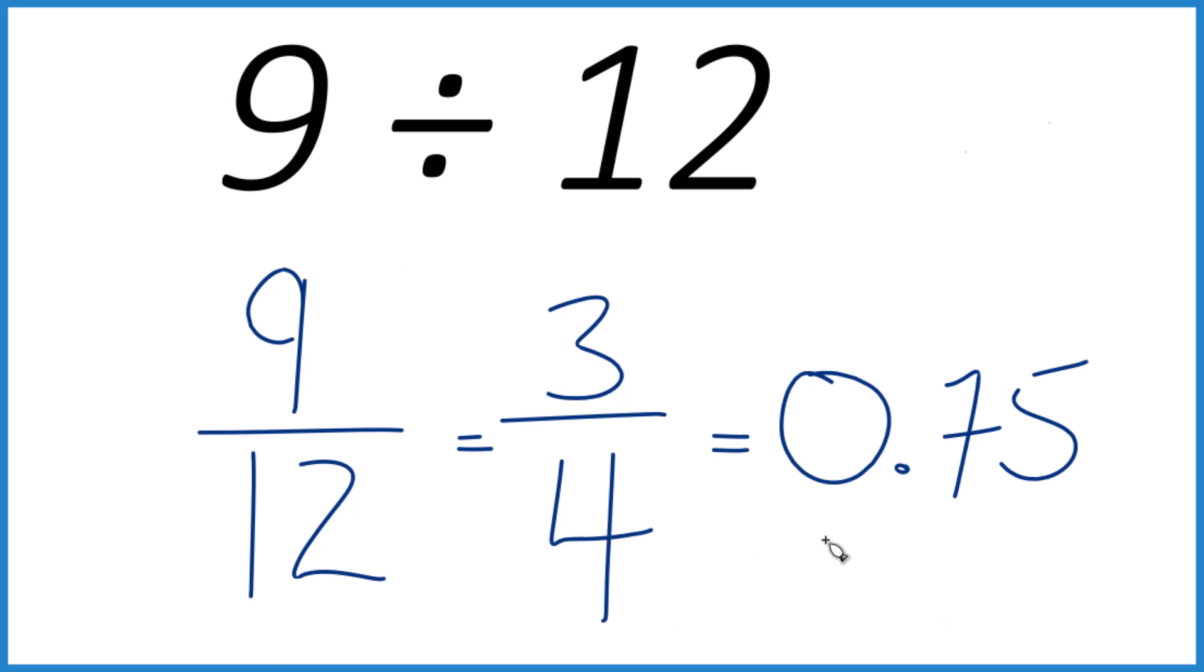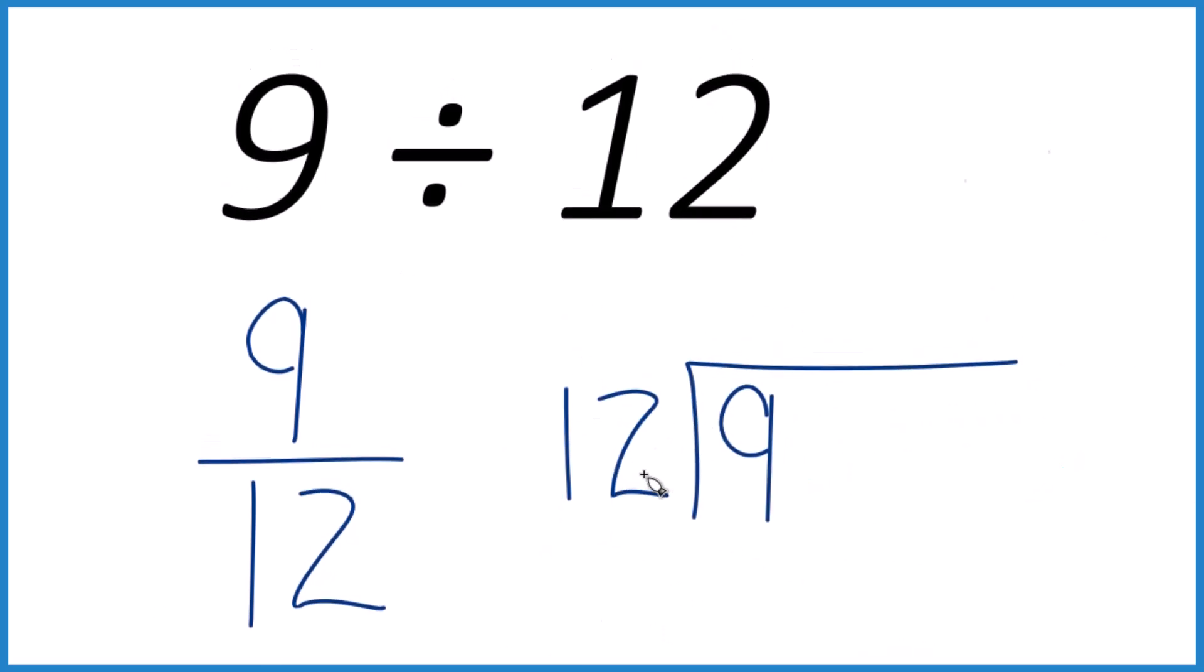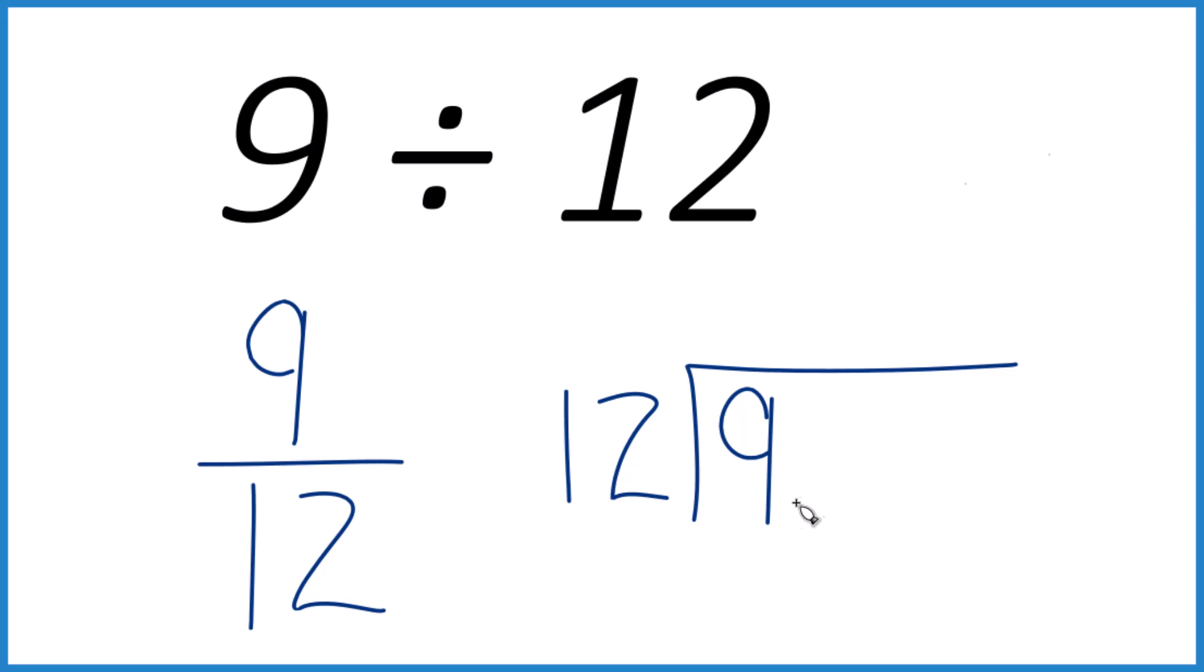But let's do this with long division. So 12 doesn't go into 9, but we could call it 9.0. Still 9. Let's put a decimal point up here. So 12 goes into 90.